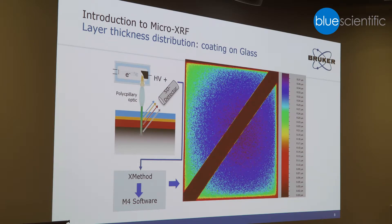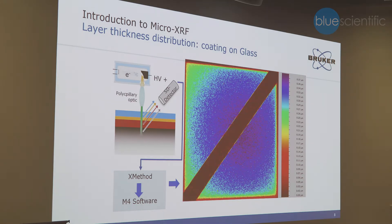You can also do layer analysis. For instance, if you have a three-layer system, you use a dedicated method, and what you see is the distribution of the layer thickness. In this case, it's the top coating — blue represents approximately 370 nm, going down to 20 nm or zero.